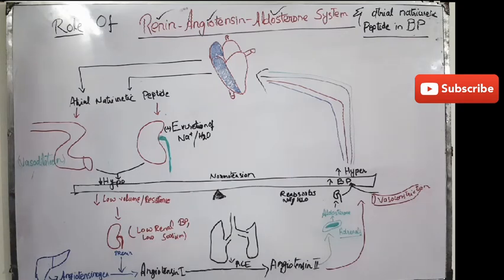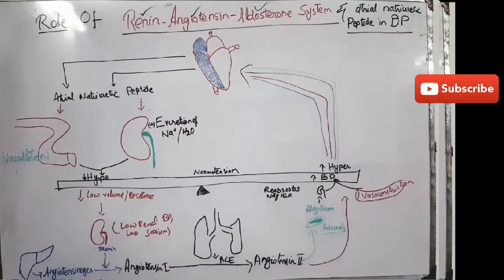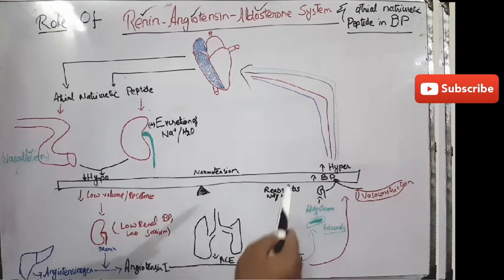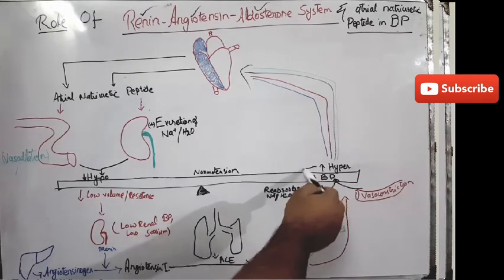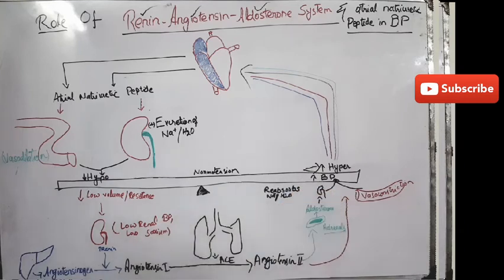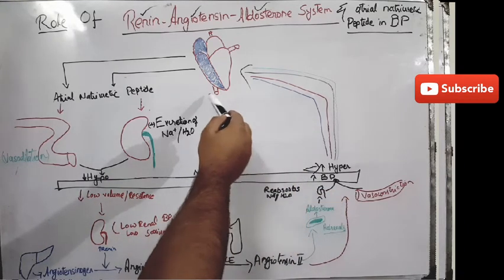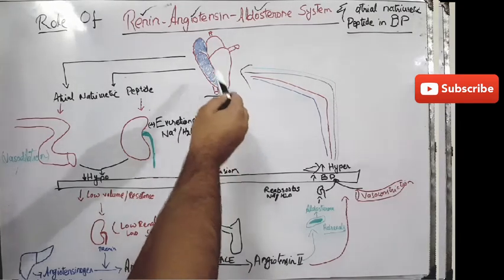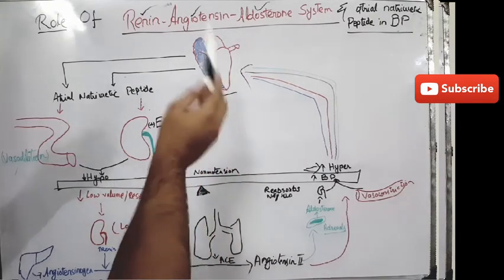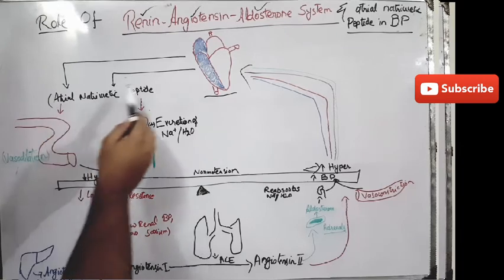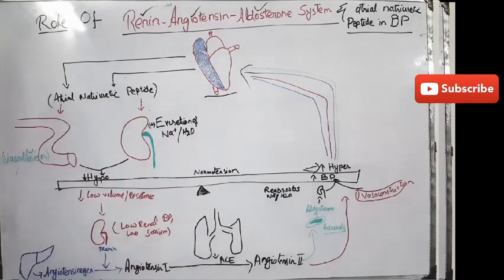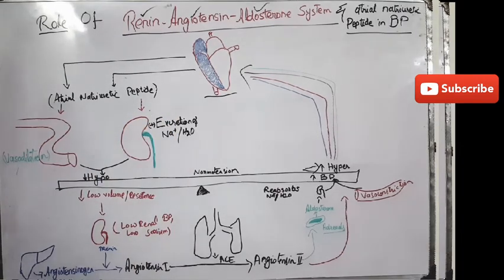In the beginning, when there is hypertension, it stimulates the production of atrial natriuretic peptide from the heart. When released, this atrial natriuretic peptide performs two functions.